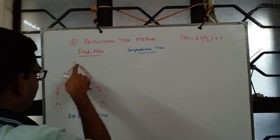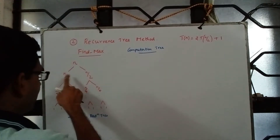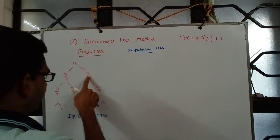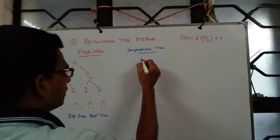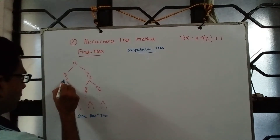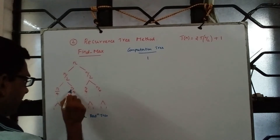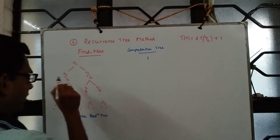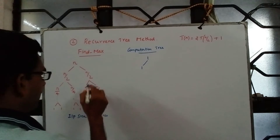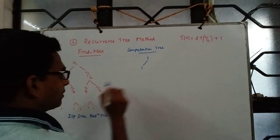We spend one comparison here to compare max1 and max2 — the max of this half and the max of this half. So at this level we incur one comparison. How do we get this max? We compare the max we get from this subtree and the max we get from this subtree, incurring one comparison. So at this stage it is 1.